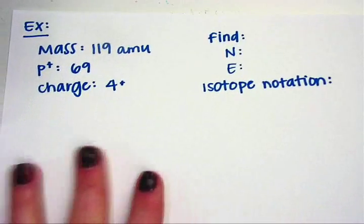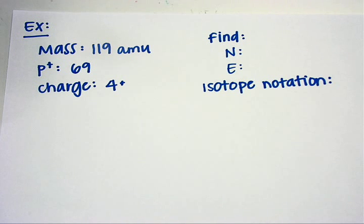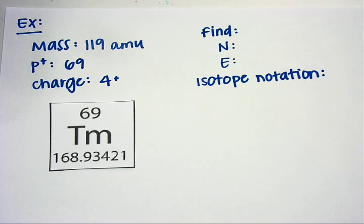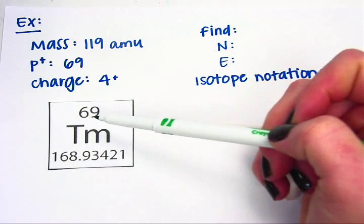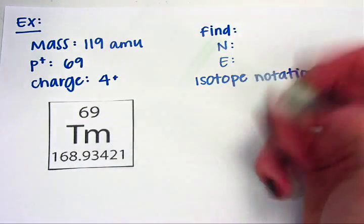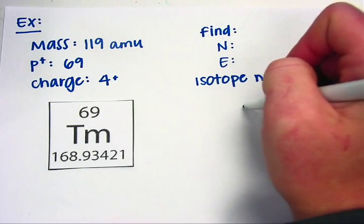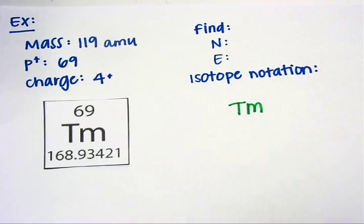I'll do one more example with ions. This is an element. I know its mass, I know its number of protons, and I know its charge. I have a lot of information to figure out. The first thing I'll do is look on the periodic table for the number of protons. That tells me I have number 69, Tm. So my symbol for isotope notation will be like that.